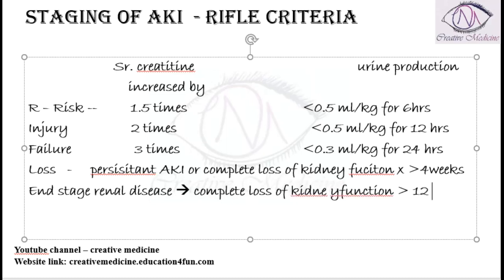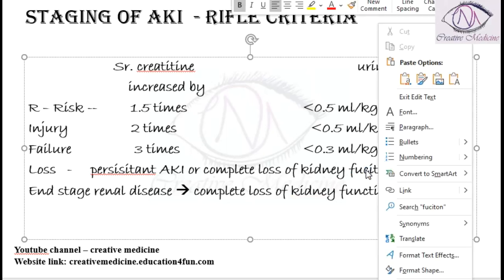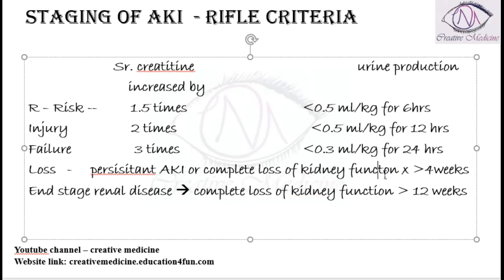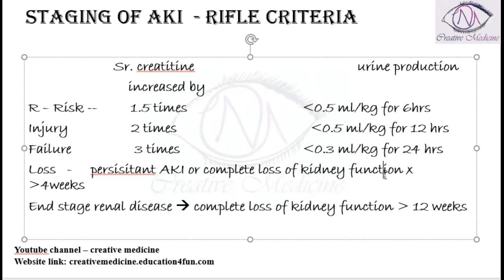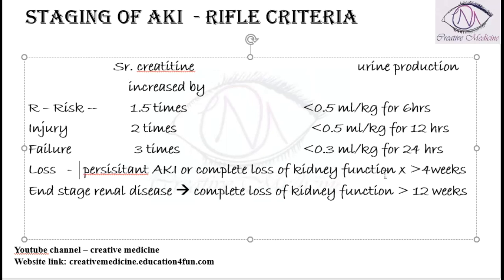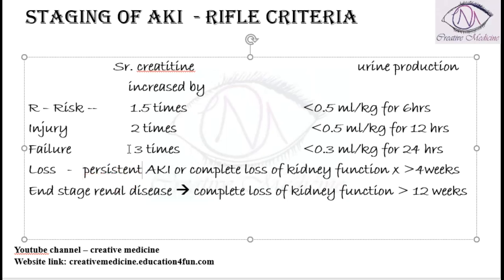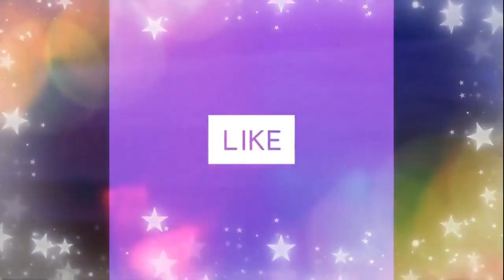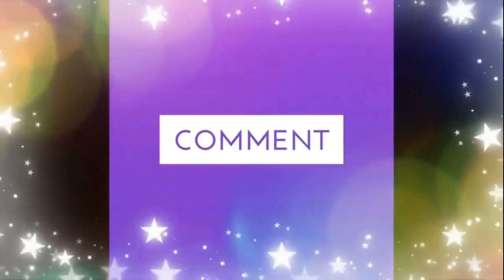In End Stage Renal Disease, there is complete loss of kidney function for more than 12 weeks — that is, more than three months. If there is complete loss of kidney function for more than 12 weeks, then it is classified as End Stage Renal Disease. This concludes the RIFLE criteria. Thank you for watching.